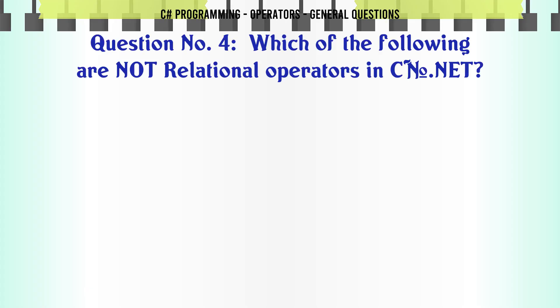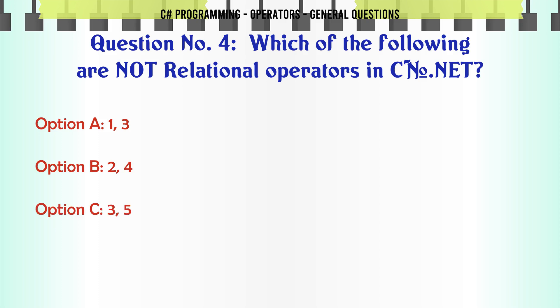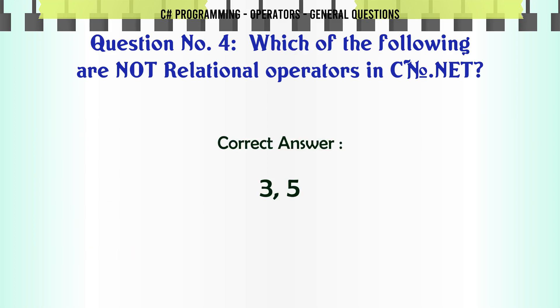Which of the following are not relational operators in C.NET? A: 1, 3. B: 2, 4. C: 3, 5. D: 4, 5. The correct answer is 3, 5.